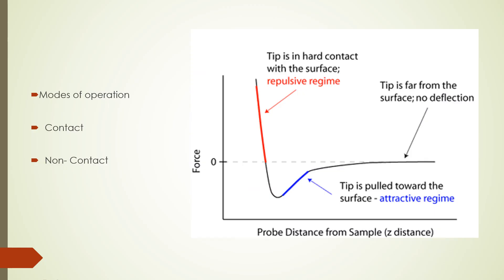The atomic force microscope has two modes of operation: contact mode and non-contact mode. Looking at the force profile, there are two regions — one in which the force is repulsive and one in which it is attractive. In contact mode, the tip is in hard contact with the surface so it experiences the repulsive force, while in non-contact mode the tip stands just above the surface and experiences the attractive force.